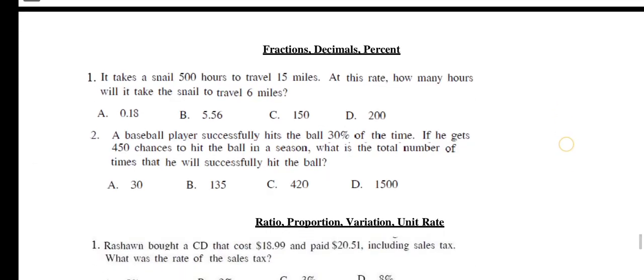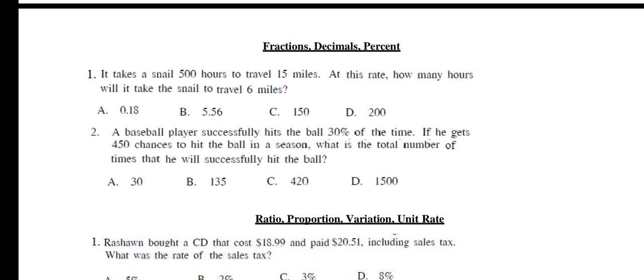Questions from fractions, decimals and percent. It takes a snail 500 hours to travel 15 miles. At this rate, how many hours will it take a snail to travel 6 miles? The right option is D, 200 hours. Number 2: A baseball player successfully hits the ball 30% of the time. If he gets 450 chances to hit the ball in a season, what is the total number of times that he will successfully hit the ball? The right option is B, 135.